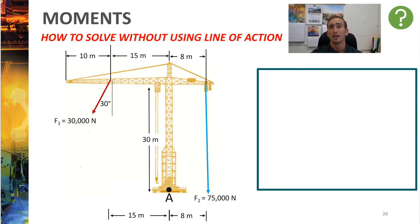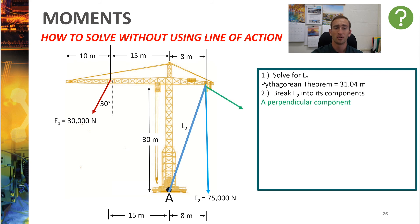Now what I'll show you is how you would have solved for the moment of F2 if you didn't use line of action. And I can tell you right now, it's not fun. So, what you could have done is you could have solved for L2, which is the distance between force 2 and point A. But again, F2 is not perpendicular to that line. So you have to solve for the components of F2. When you do that, you'll find you have a perpendicular component, shown in green, and a parallel component, shown in red.